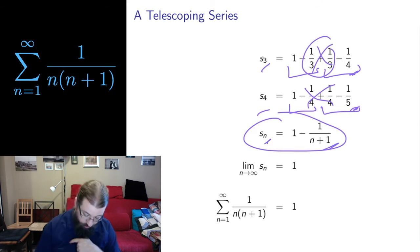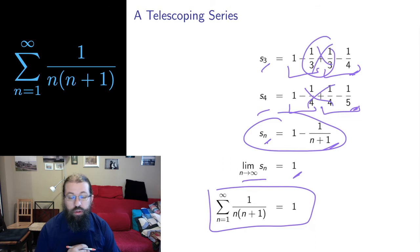And then we take the limit of these partial sums. 1 over n plus 1, as n goes to infinity, goes to 0. We're dividing by a large number. We get a small number. So in the limit, all that's left is 1. And we conclude that this sum, this infinite series, has value 1 because of this telescoping nature of its partial sums.